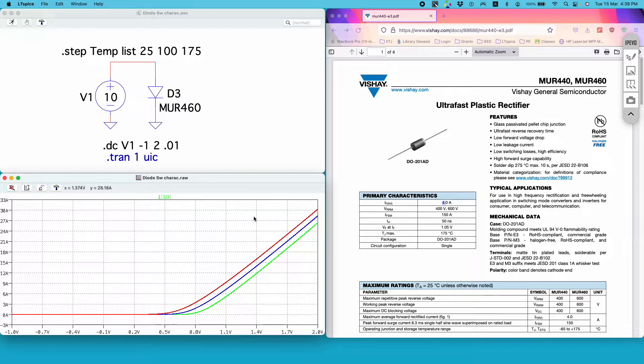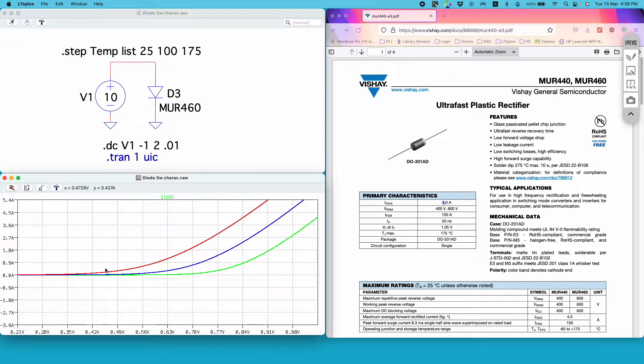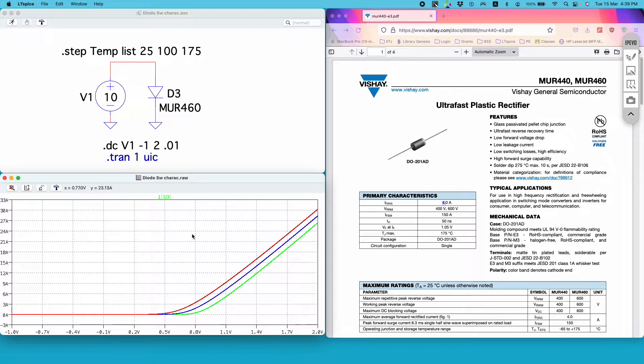If I run the simulation I get three distinct curves. The red one is for 175, blue for 100, and green for 25 degrees Celsius. As the junction temperature of the diode increases, the forward voltage drop decreases, which matches very closely with the characteristics of a power diode.